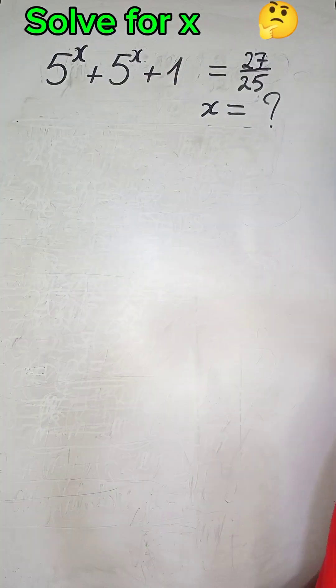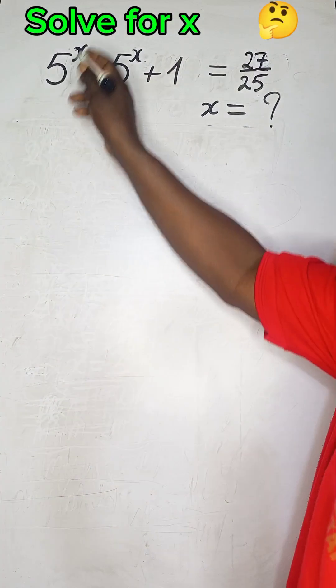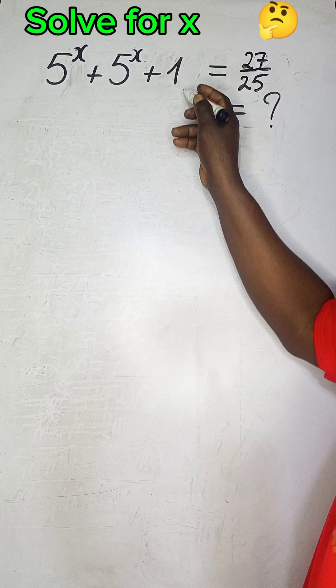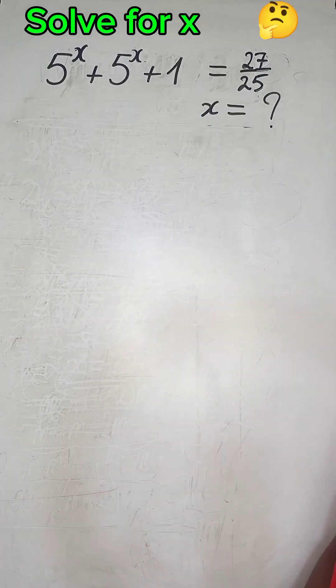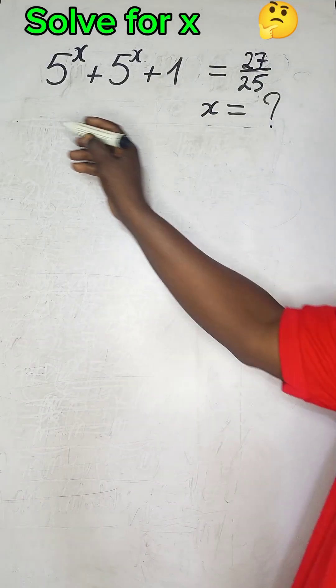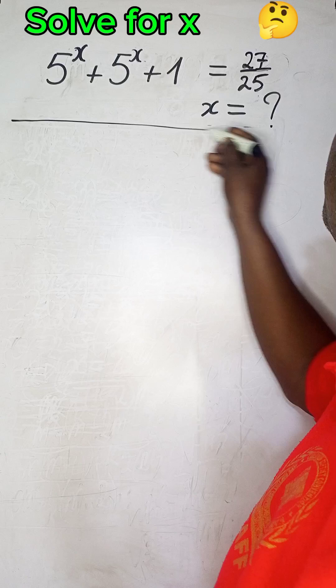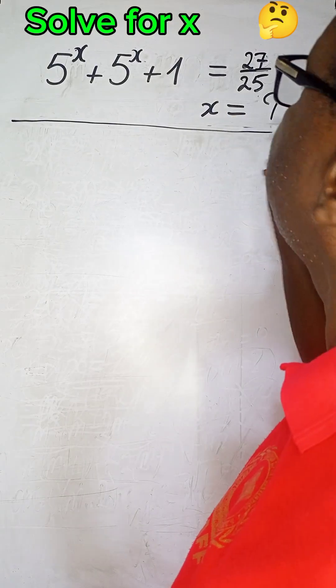Now, let's solve for x in this exponential equation. We have 5^x + 5^x + 1 = 27/25. What is the value of x? This is very simple. Follow the solution carefully.